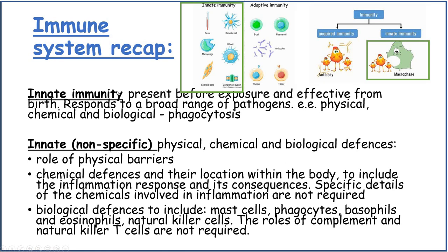Innate immunity is present before exposure and is effective from birth. It responds to a broad range of pathogens. Some examples are physical barriers like the skin, chemical barriers like the hydrochloric acid in the stomach, and biological barriers like the phagocytes performing phagocytosis. So innate or non-specific defences are physical, chemical and biological.